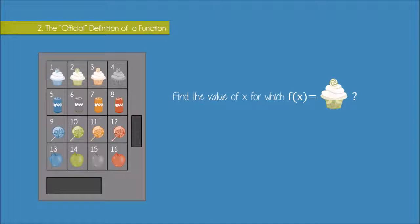Because remember, what we have inside the bracket of our function notation is the input. So we have x here representing an unknown input. So it's asking, what would x have to be for us to get a green cupcake out of the vending machine?